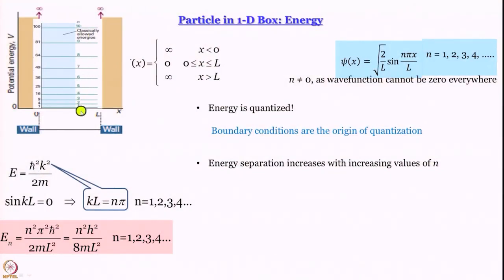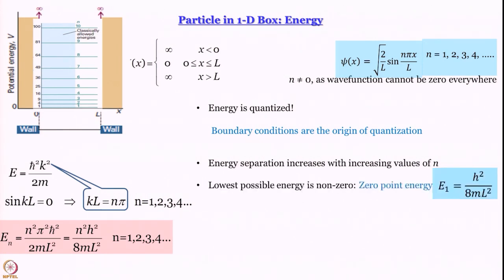This is a great revelation, but that is not all. Looking at the energy ladder for particle in a box, the separation in energies increases as you go higher and higher up. Another important observation: zero energy is not possible, because the smallest value of n is 1, and for that, the energy has a value of h squared divided by 8 m L squared, which is non-zero. This brings us to the concept of zero point energy, which becomes a governing factor when we discuss the simple harmonic oscillator.